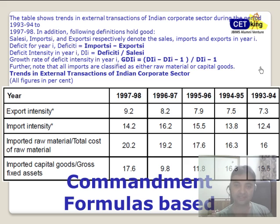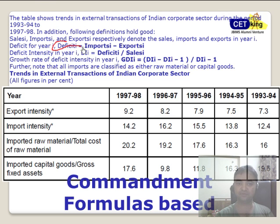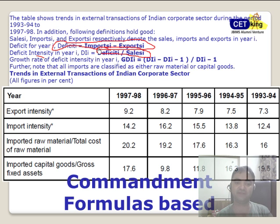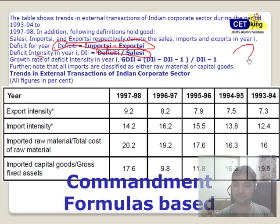Take it in writing from me — every year there is one question, including this year, based on formulas. By formula I mean, for example, deficit is import minus export, and intensity of the deficit is deficit of that year divided by sales. There will be a question based on formulas, or a formula will be given to you and you have to use it to find values. If you open your books you'll find this is very common — there will be three questions in your CAT paper based on formulas.